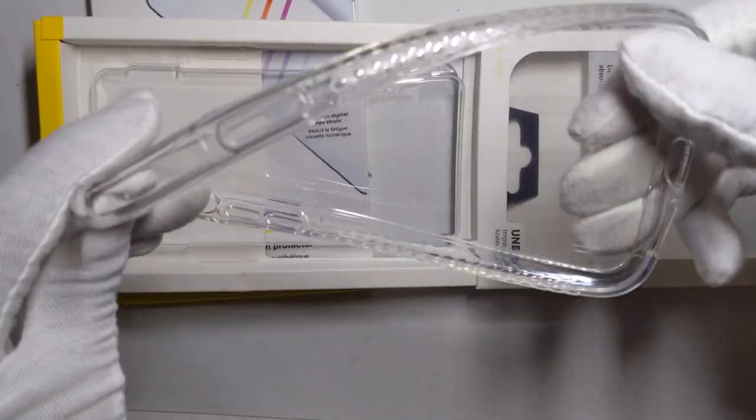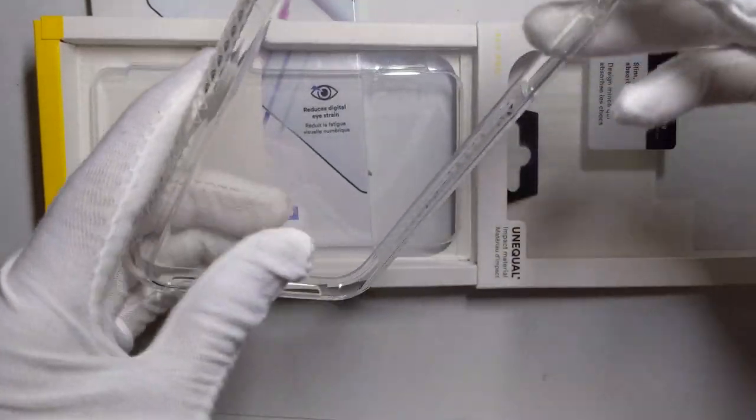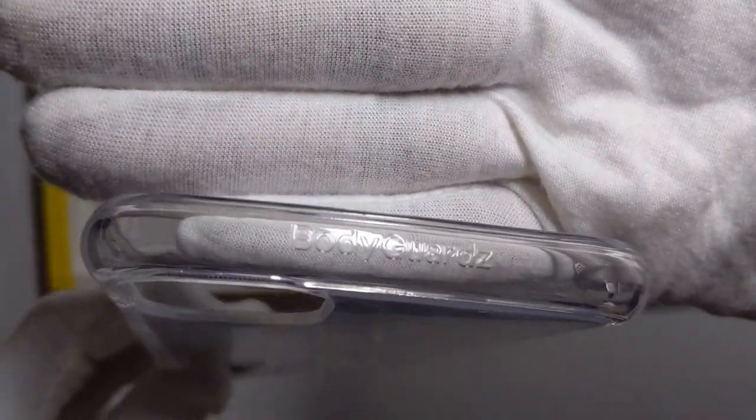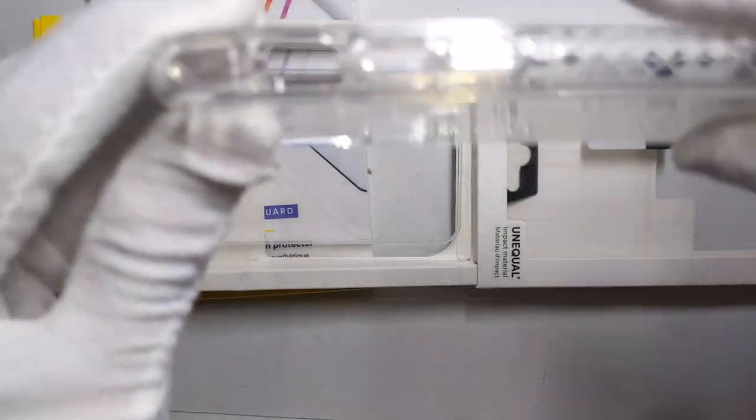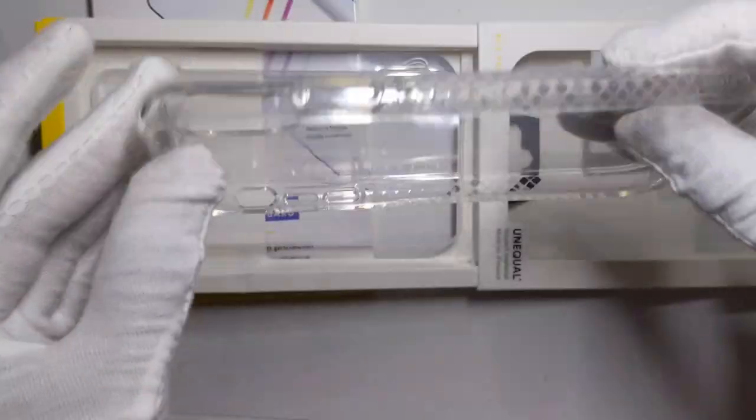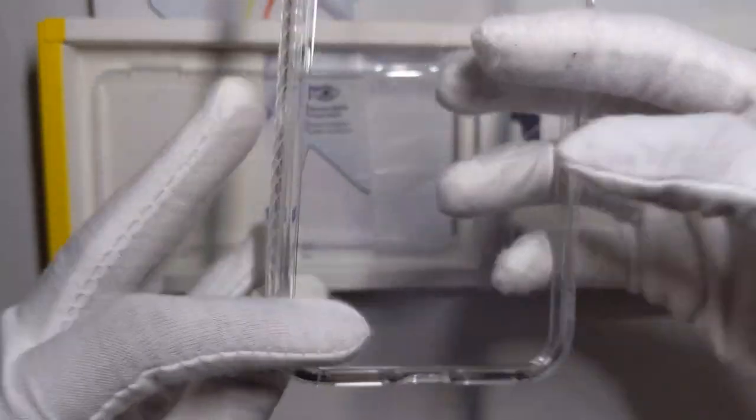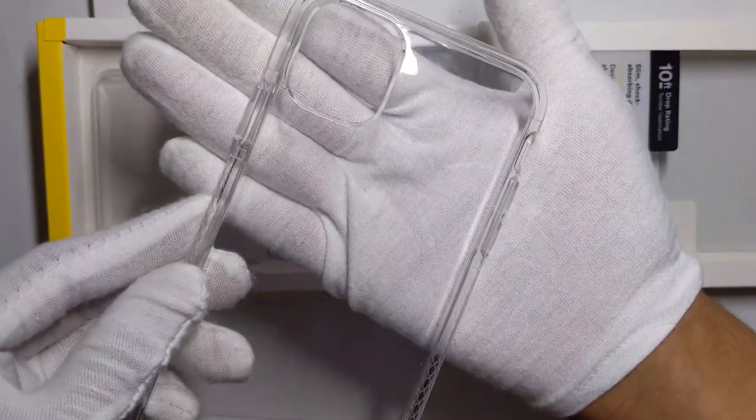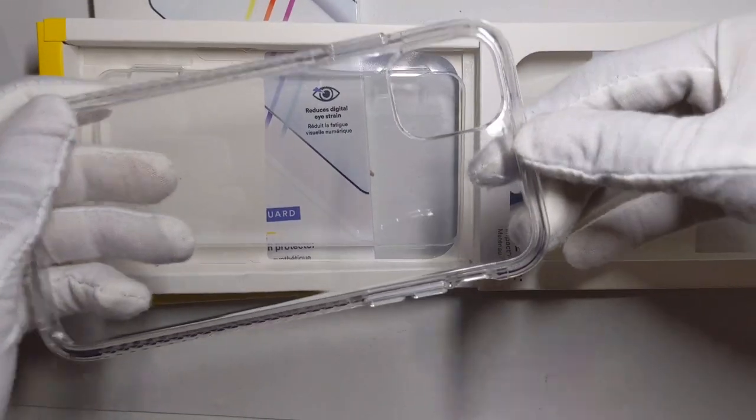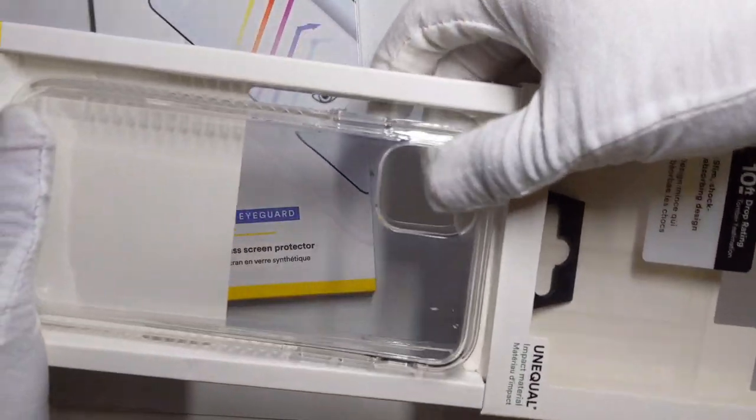It is a slim TPU rubber case, really nice sleek design right here. You have branding, this is BodyGuardz. Then on the side you have the volume marker buttons and the mute button, the power button right here. This one is fully clear, it looks really nice. We're gonna put it up to the phone, not a difference, that's how clear it is. Let's go into the last product.